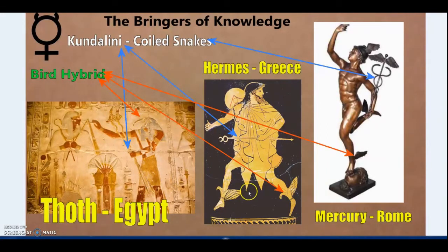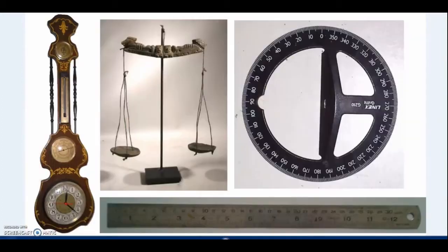Thoth being part bird, and we see Hermes has the same ability — the ability to fly. Again a bird hybrid and a bringer of knowledge. Both of them are gods of weights and measures.